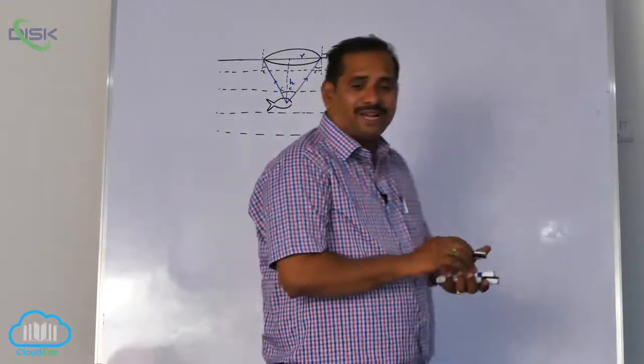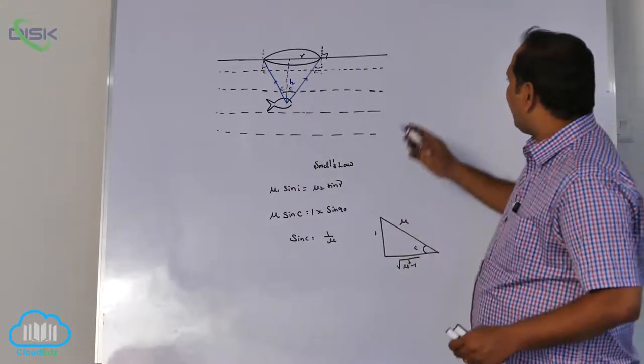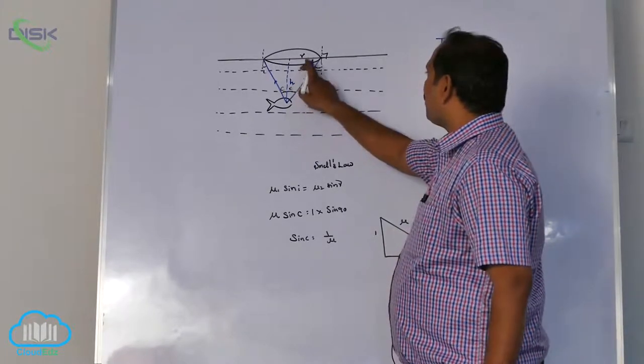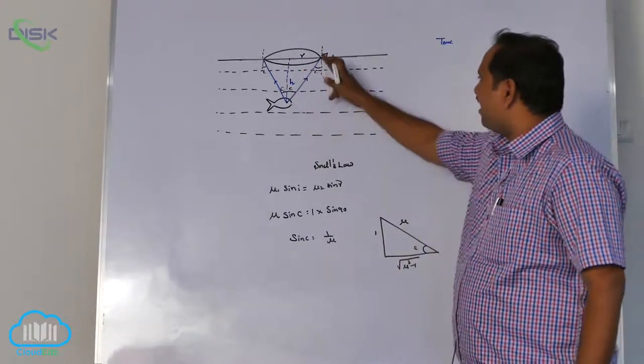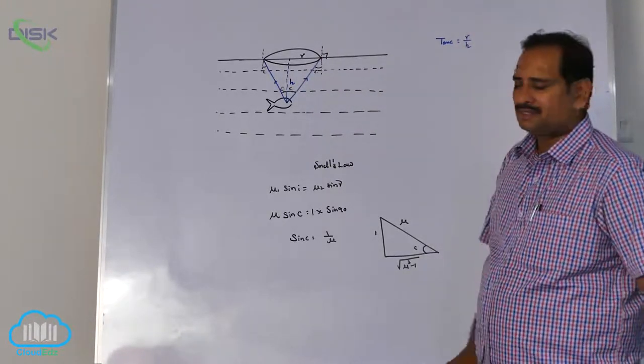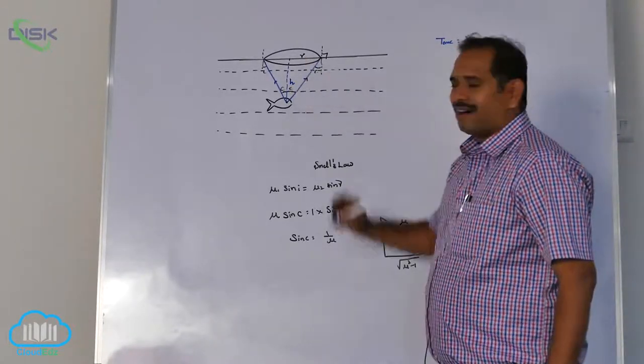Then we want to calculate this triangle. From the triangle, tan C is 1 over root of mu square minus 1. What you want to measure here is radius of the cone. Tan C equal to opposite side by adjacent side, equal to R by H. From triangle, tan C equals R by H.